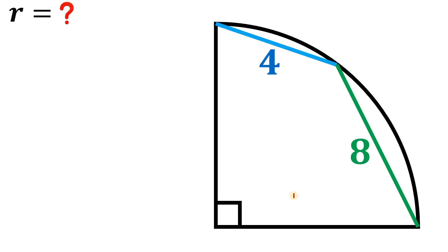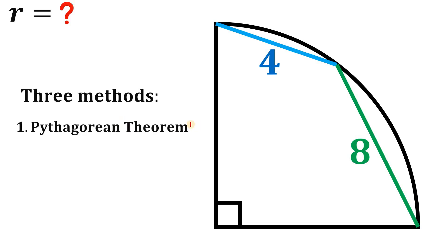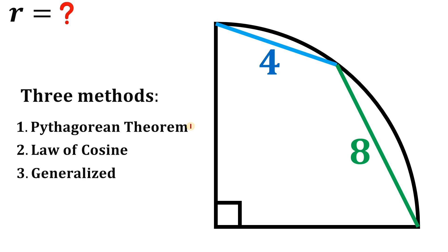Given this figure, the goal is to find the length of the radius. Instead of showing you one solution, I will show you three different methods to answer this question. The first is the Pythagorean theorem, even though we don't have a right triangle yet — but we will use it. The second is the law of cosines, and the third is a generalized formula for the radius of this quarter circle.